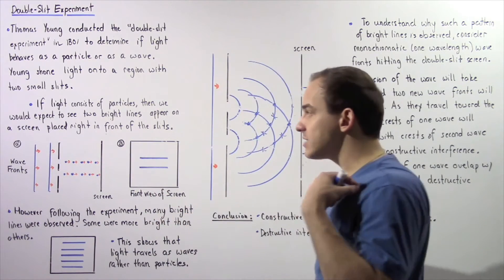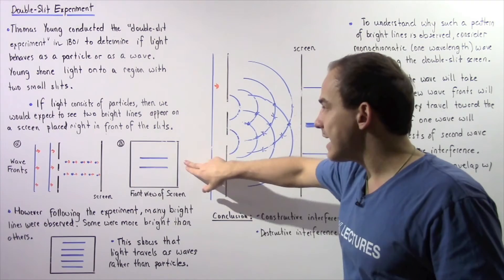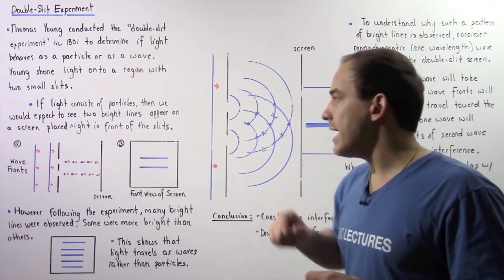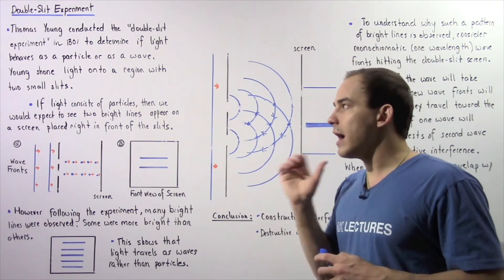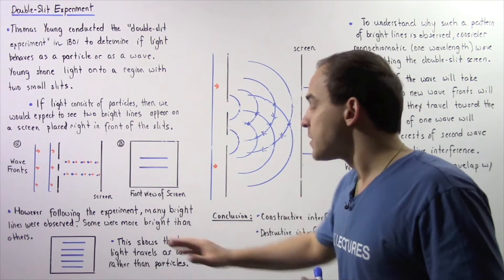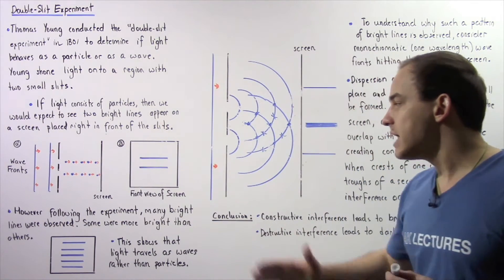So if the results are produced as shown in diagram A and diagram B, then light travels as a particle. However, following the experiment,